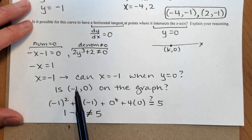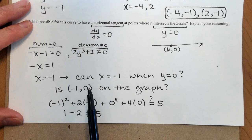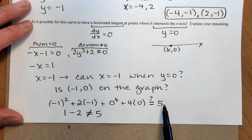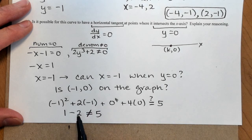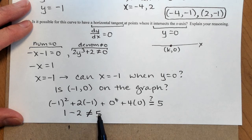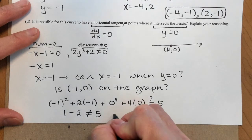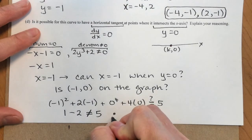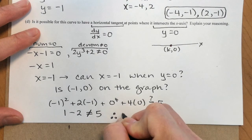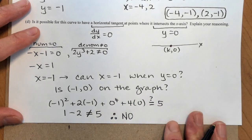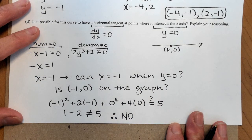To summarize: I plugged the point negative 1, 0 into the original equation to see if it satisfies the equation, and I wind up with negative 1 equals 5, which is false. So negative 1, 0 is not on our curve, and no, there is no horizontal tangent line where the curve intersects the x-axis.